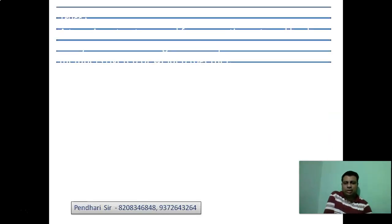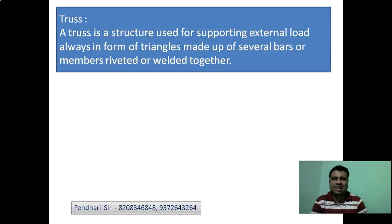So as to start with, what truss is? Truss is a structure used for supporting external load, always in form of triangles, made up of several bars or members, riveted or welded together. Basically a triangular structure which can be used for load support.